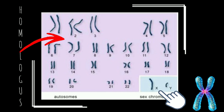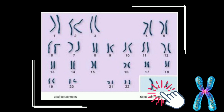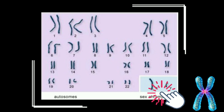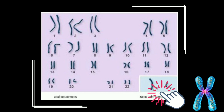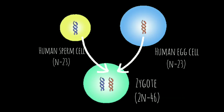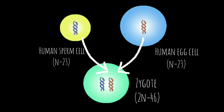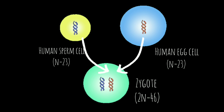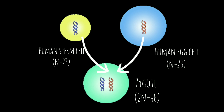Gametic chromosome number is precisely one half of the somatic number, is represented by n, and denotes the number of chromosomes found in the gametes of a species. A zygote is produced by fusion of one male and one female gamete. The zygote will contain 2n chromosomes. Thus in any individual, one homolog of each chromosome comes from its male parent while the other homolog is contributed by its female parent.